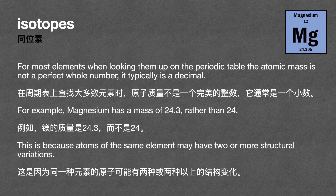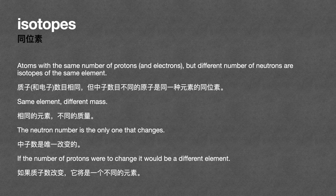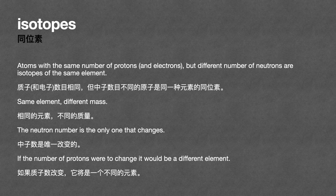This is because atoms of the same element may have two or more structural variations. Atoms with the same number of protons and electrons but a different number of neutrons are isotopes of the same element — same element, different mass. The neutron number is the only one that changes.